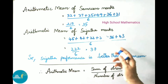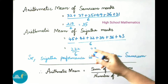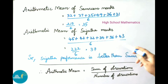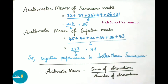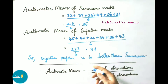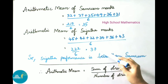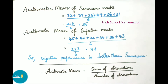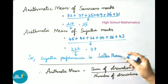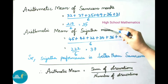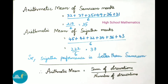Arithmetic mean of Sujata's marks equals 45 + 42 + 22 + 34 + 36 + 43 divided by 6 subjects. The sum of all six subject marks is 222, divided by 6, which equals 37. Observing the arithmetic means of both students: Sujata got 37 and Sumbreen got 35. Therefore, Sujata's performance is better than Sumbreen's.